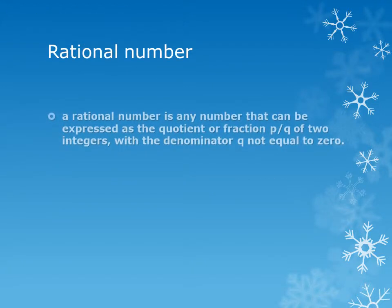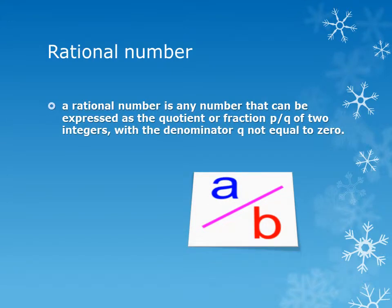Rational Number. A rational number is any number that can be expressed as the quotient or fraction p/q of two integers, with the denominator q not equal to 0.